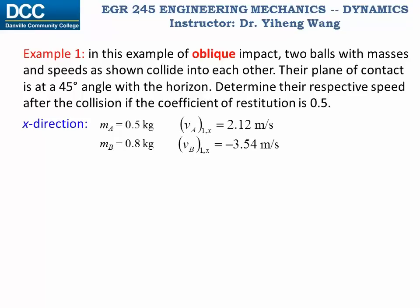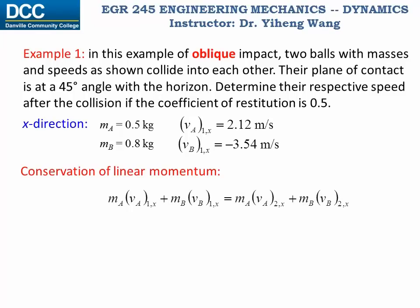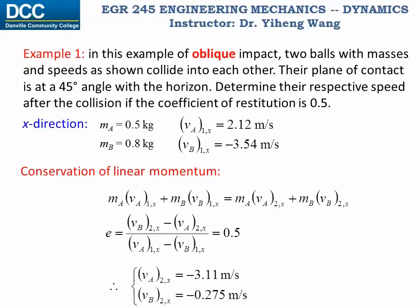Since the x-axis is set up to be along the line of impact, x direction is where impact happens. So along the x direction, we can apply the conservation of linear momentum by treating the two particles as one system, and their total linear momentum before the collision is the same as their final total linear momentum after the collision along the x-axis. And since we know that the coefficient of restitution is 0.5, we have two equations, two unknowns. Therefore, we can solve for both unknowns, which are the final velocities of the two particles but only along the x direction.